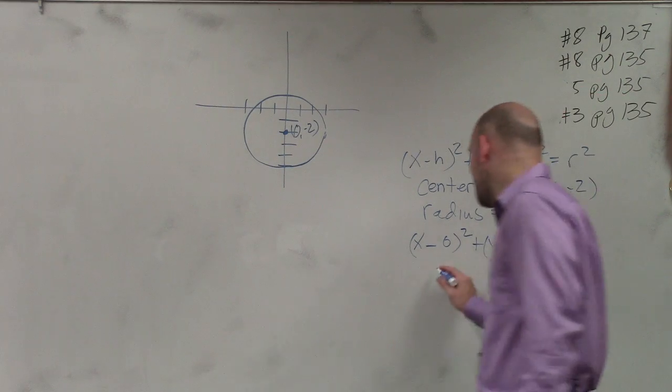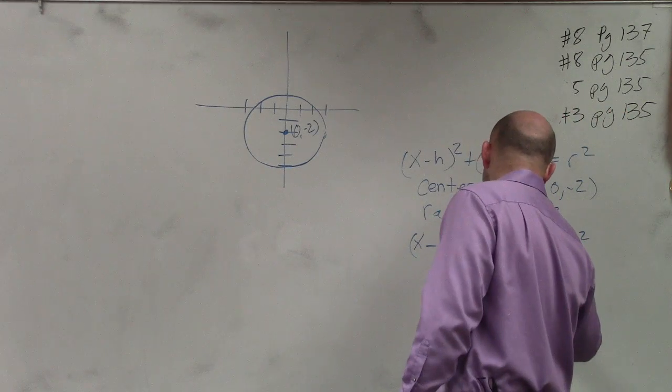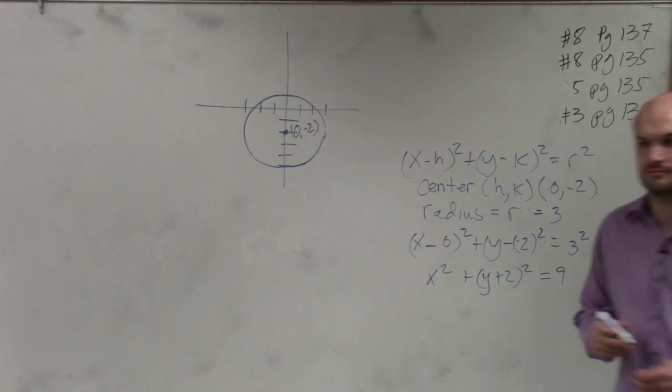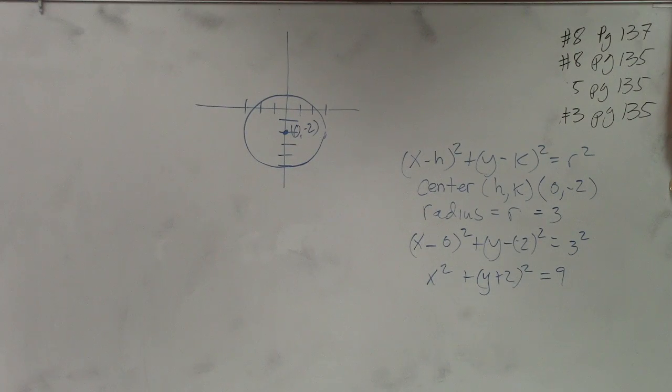Well, x minus 0 is just x. So I have x² plus y minus a negative 2, which is y plus 2, squared equals 9. And that is your equation of the circle.